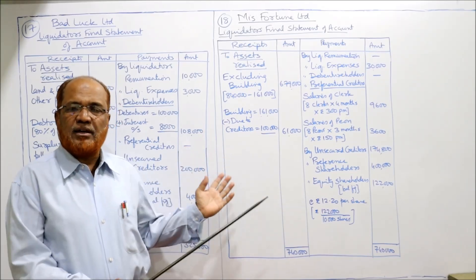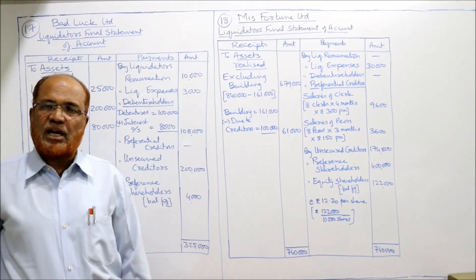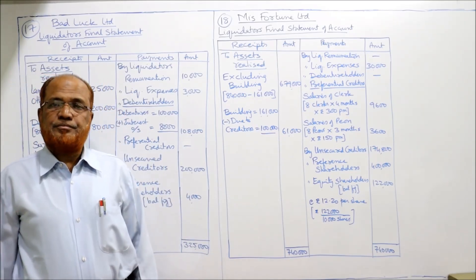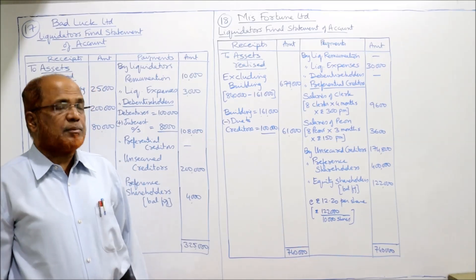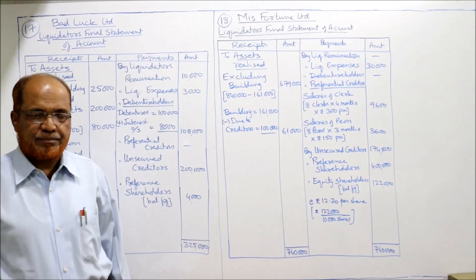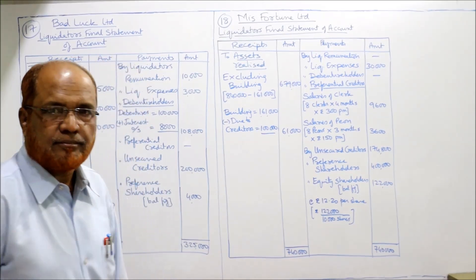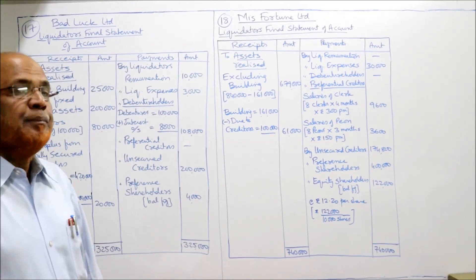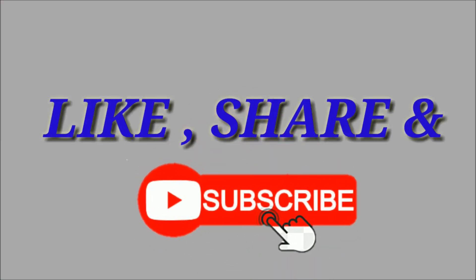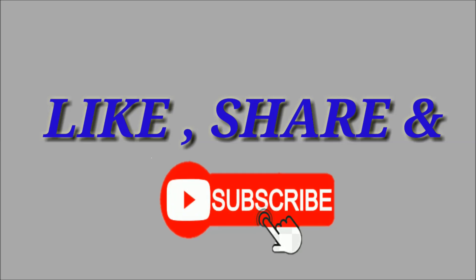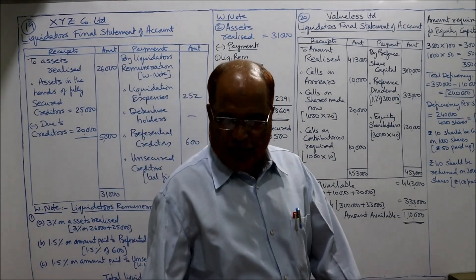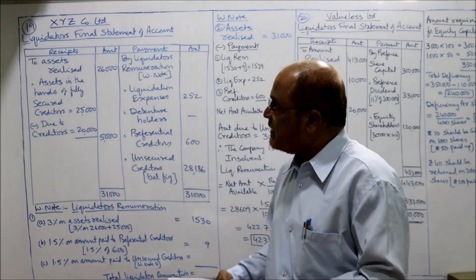Everything has been shown in the liquidator's final statement of account. Hope you understood. We have completed problem number 18. Now we start problem number 19.